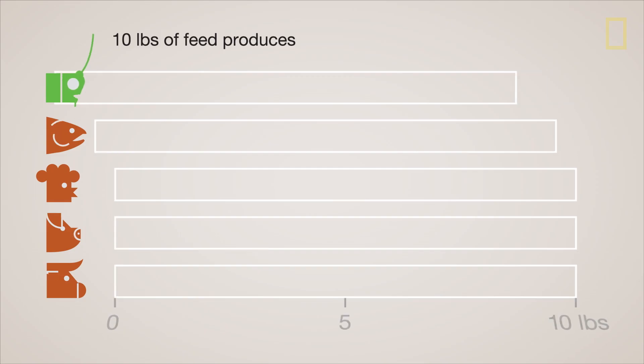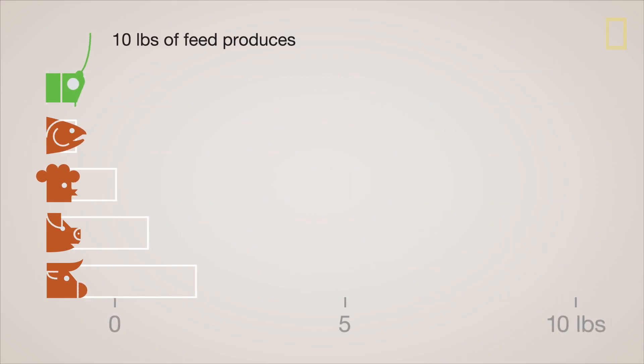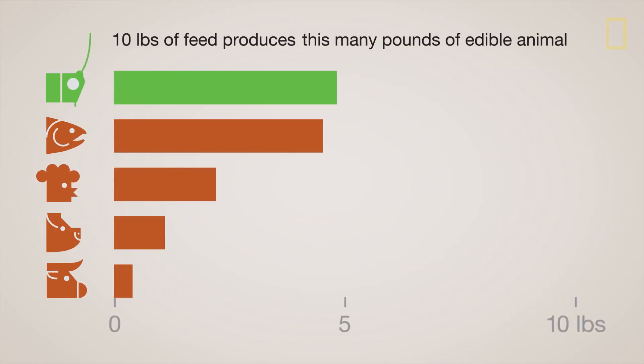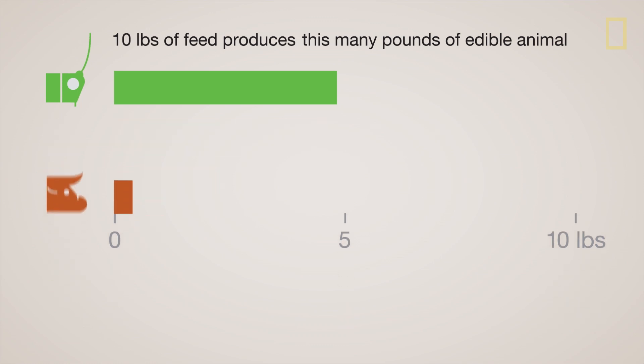Because they're cold-blooded, insects and fish require, pound-for-pound, less food to grow than birds and mammals. In fact, crickets are 12 times as efficient as cattle.